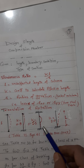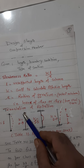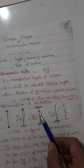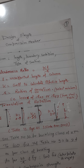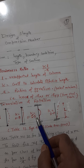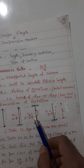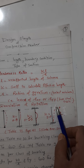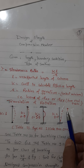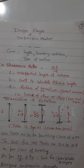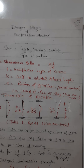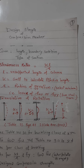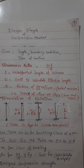When both ends are restrained in translation as well as rotation, the buckling length is theoretically 0.5 times the length, but practically taken as 0.65. When one end is restrained in both translation and rotation and the other end is completely free, k equals 2. You need not memorize these — just refer to IS code Table 11, page 41, and directly use the value of k to get the effective length.